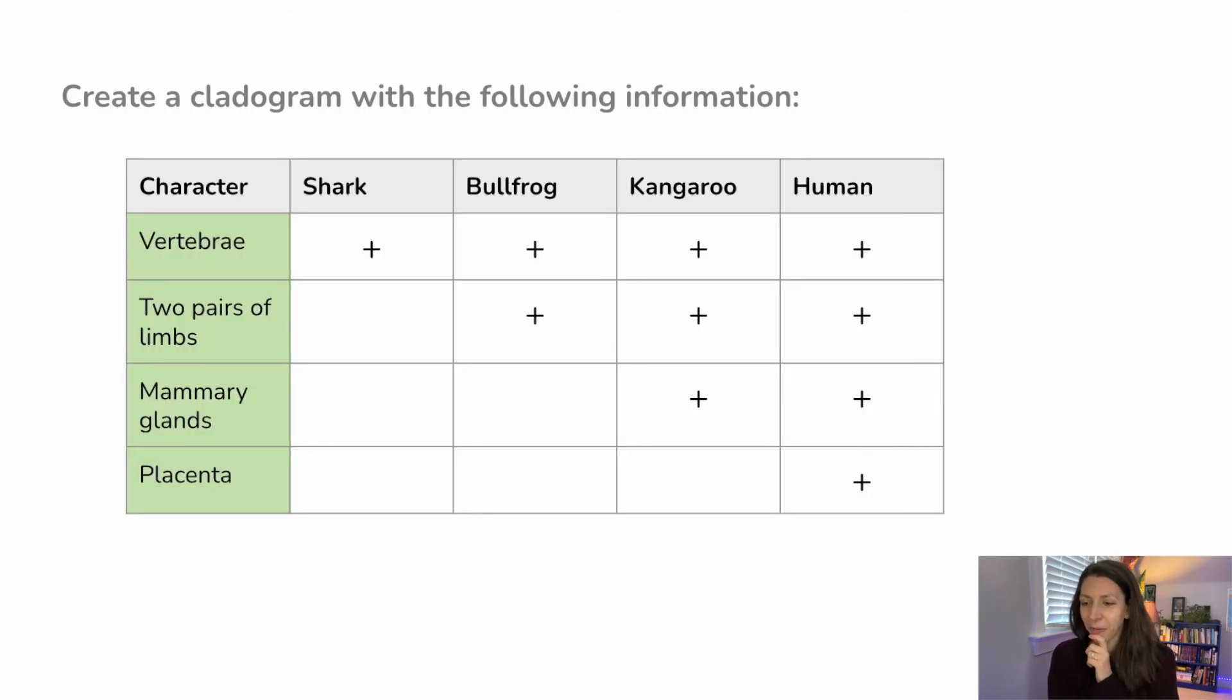Create another cladogram with the following information. We have a shark, a bullfrog, a kangaroo, and a human. You notice on this table here, the organisms are at the top and the characters are on the left. Go ahead and pause the video and work on this cladogram.